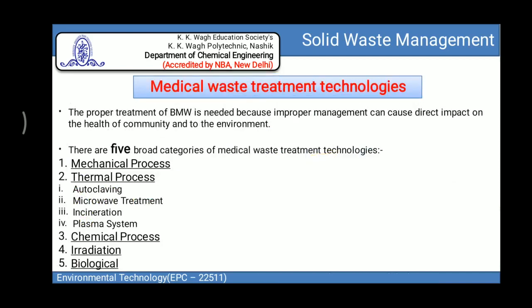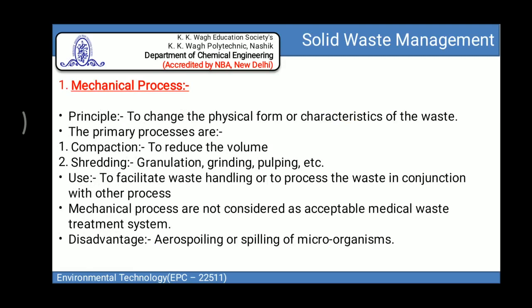After transportation to the disposal area, treatment of biomedical waste takes place. It is necessary to treat biomedical waste because improper management can cause direct impact on the health of the community and the environment. There are five broad categories of biomedical waste treatment technology: mechanical process, thermal process, chemical process, irradiation process, and biological process. The thermal process is further classified into autoclaving, microwave treatment, incineration, and plasma system.